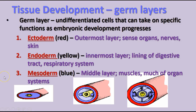Once there are three layers of cells, these are called the germ layers — undifferentiated cells that can take on different functions as embryo development continues. The three layers are: the ectoderm, the outermost layer shown in red in the diagrams, which will eventually become in the adult animal the sense organs, nervous system, and skin.